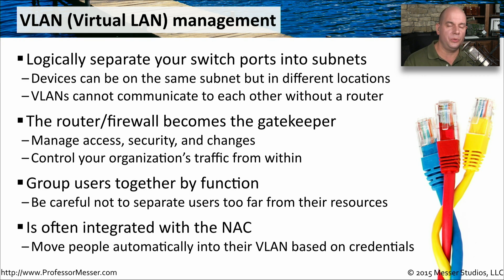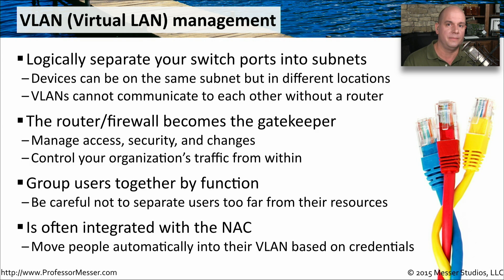The shipping and receiving team would have the same shipping and receiving resources all located on their private VLAN. We're generally going into a switch and configuring specific interfaces to be members of specific VLANs. But if you have a network access control device, you can even automate that process. When someone is logging into the network, the NAC will recognize that user, understand what group that user belongs to, and change the interface on the switch so that that person is on their specific VLAN.